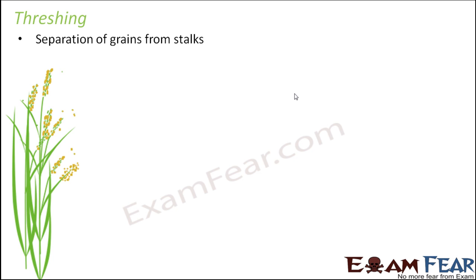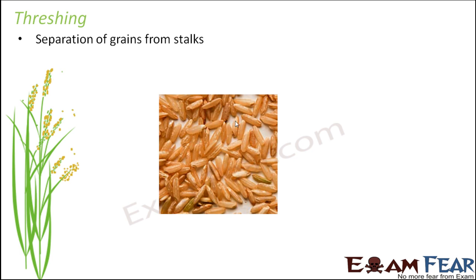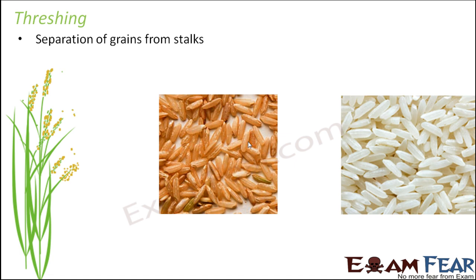What is threshing? It is the process of separation of grains from stocks. If you look at a paddy field, from where do we get rice grains? When you look at the plants, you have these stock-like structures — stems or stocks — and on these stocks you have grains enclosed in a covering.